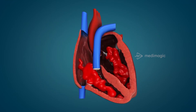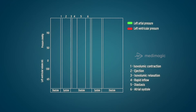The pressure changes in the atria during a cardiac cycle are as follows. Prior to the onset of atrial systole, the intra-atrial pressure is slightly above zero and slightly higher than the pressure in the ventricles. As the atrial systole progresses, there is a steep rise in the intra-atrial pressure — about 4-6 mmHg in the right atrium and about 7-8 mmHg in the left atrium.